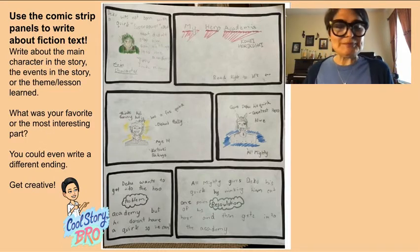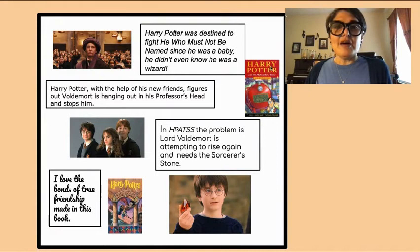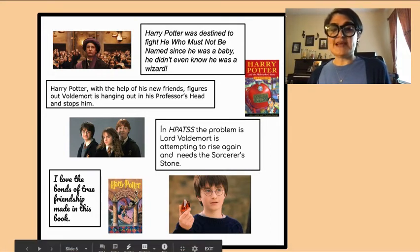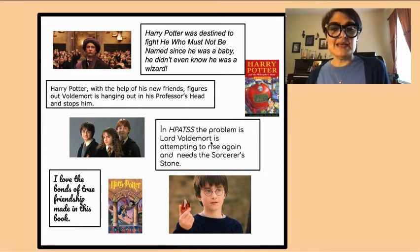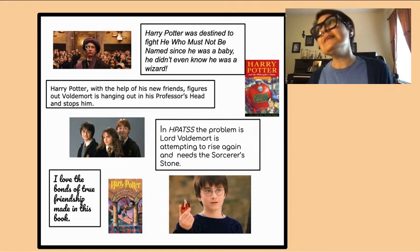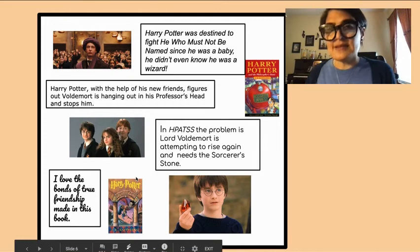I'm going to show you my example. I did one on Harry Potter — a poster format. 'Harry Potter was destined to fight he who must not be named since he was a baby and he didn't even know he was a wizard.' In Harry Potter and the Sorcerer's Stone, his problem was that Lord Voldemort was attempting to rise again and needed the Sorcerer's Stone to do it. Harry Potter, with the help of his new friends, figures out that Voldemort is hiding in his professor's head and stops him. I love the bonds of true friendship he makes in this book. That's the kind of example I did using the idea of making a poster.